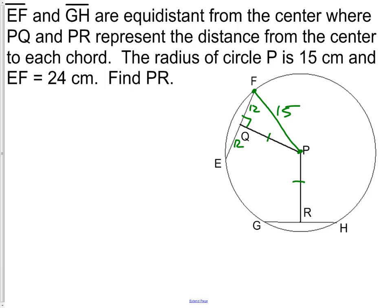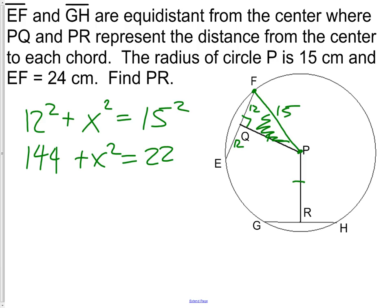So if you notice, this green shaded triangle is actually a right triangle. So we can do 12 squared plus x squared equals 15 squared. The x squared part is going to be the distance from P to Q, which will be the same as the distance from P to R. So we have 144 plus x squared equals 225.